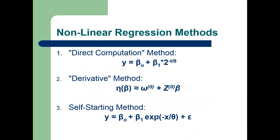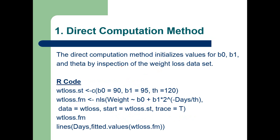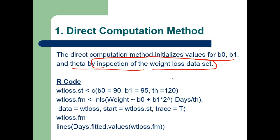There are three ways of computing the parameters: the direct computation method, the derivative method, and the self-starting method. In the direct computation method, we initialize the values of beta 0, beta 1, and theta by inspection of the weight loss data. Using R code, we assume starting values drawn from the data, fit the model iteratively, and find the values of beta 0, beta 1, and theta that minimize the residual sum of squares.